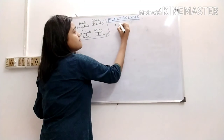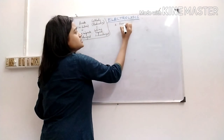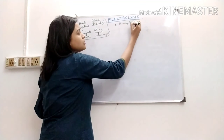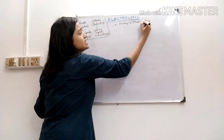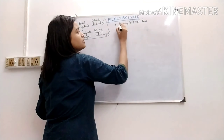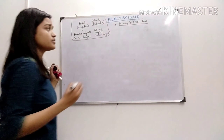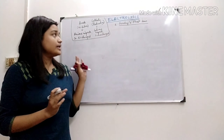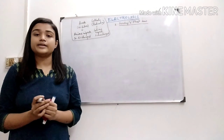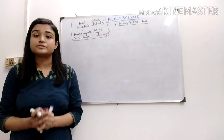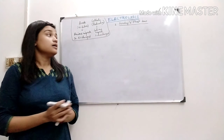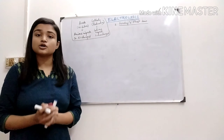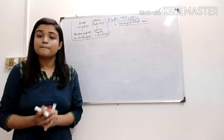The first one is Faraday's Law of Electrolysis — we will do the first law. Faraday's first law states that when an electric current is passed through an electrolyte, the amount of substance that is deposited on the respective electrode is directly proportional to the amount of electric current that we are passing through.